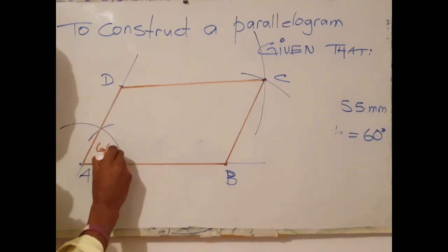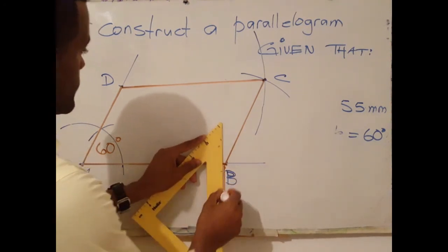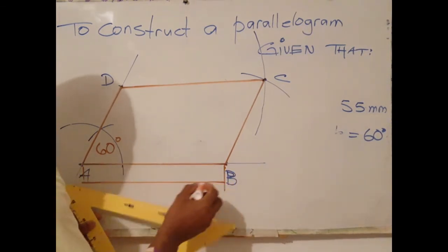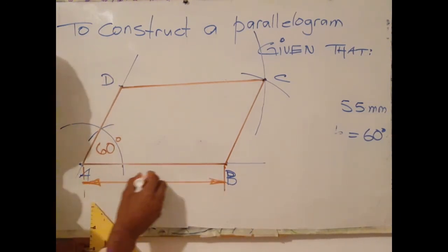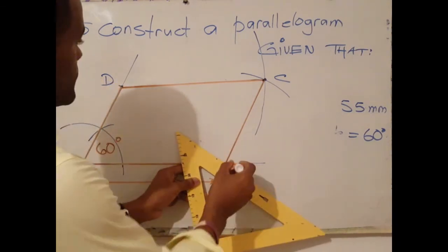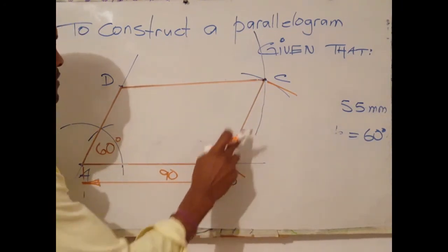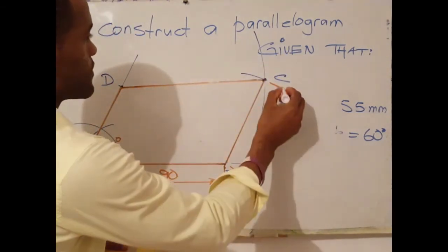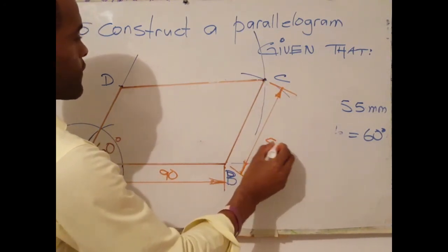And of course it's good to label your joints: 90, 90, 55, and 55.